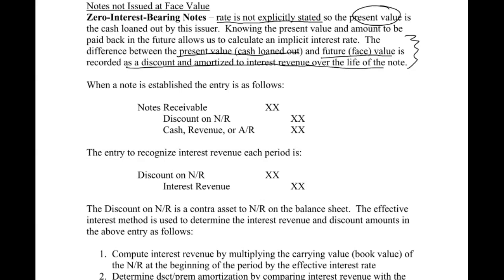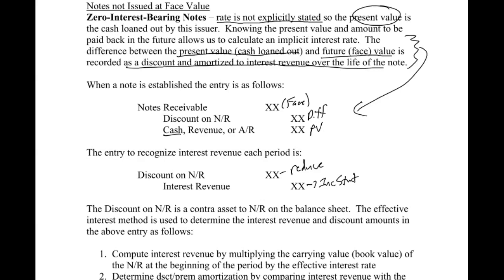The key point is that the difference between the present value — which is the amount loaned out — and the future or face value of the note is recorded as a discount and amortized to interest revenue over the life of the note. So in the first journal entry when a note is established, we debit notes receivable at face value and credit cash at present value. The discount is the difference. The entry to record interest revenue each period reduces the discount and records interest revenue to the income statement.